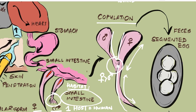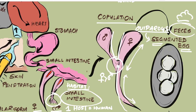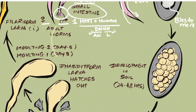This gives a Y-shape configuration during copulation. The male fertilizes the female, and the female is oviparous — meaning she will lay eggs. Interestingly, the eggs are segmented initially. The eggs released in feces are oval in shape, with four blastomeres inside them.